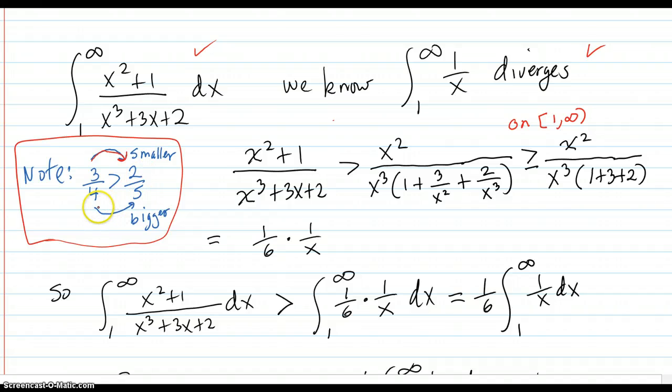Or you can make the denominator bigger, and that'll make the next fraction smaller, proving that your original fraction is bigger. Or you can do both.